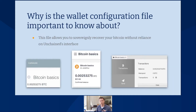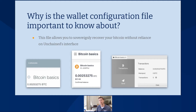So why is it important to know about your wallet configuration file? This file allows you to sovereignly recover your Bitcoin without needing to rely on the Unchained interface. If you have this file — the treasure map to your Bitcoin — and something happens to the Unchained platform, we refer to it as a doomsday scenario. If Unchained is unavailable, you could take this wallet configuration file and feed it to another Bitcoin wallet software to rebuild your vault.